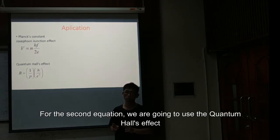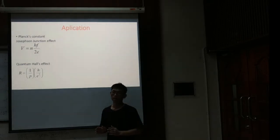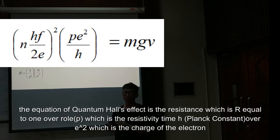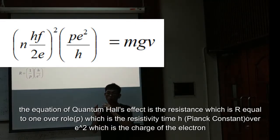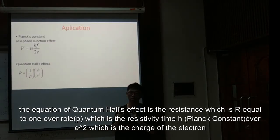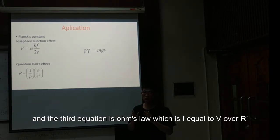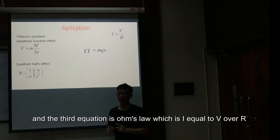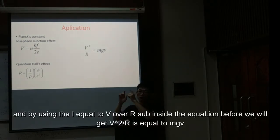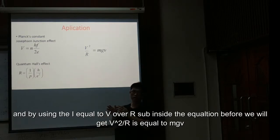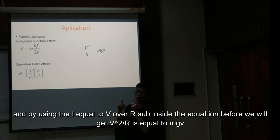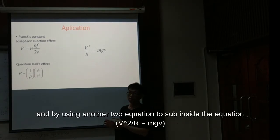For the second equation, we use the quantum Hall effect. The equation of the quantum Hall effect is the resistance R equals 1 over rho, which is the resistivity, times H, the Planck constant, over e squared, which is the charge of the electron. The third equation is Ohm's law, which is I equals V over R. By using I equals V over R, substituting inside the equation before, we will get V squared over R equals mgv.